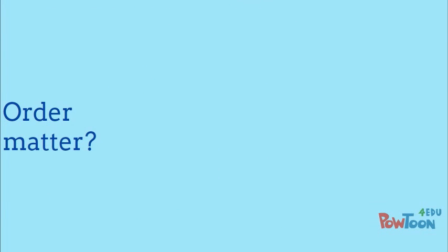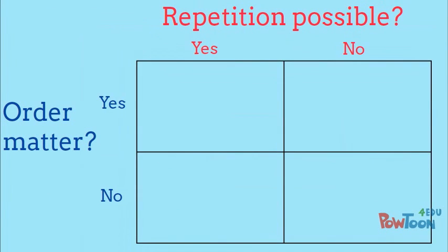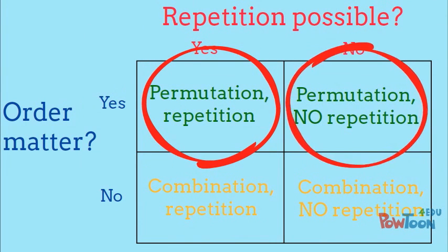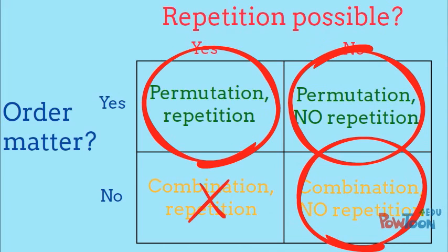So there are four possible scenarios based on whether or not order matters and whether or not repetition is possible. And each one has its own method for counting the number of possibilities. In this video, we'll explain these three and show how to solve sample problems.